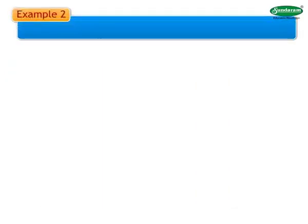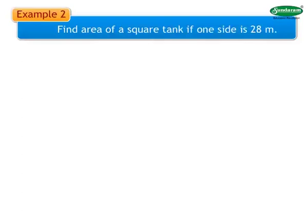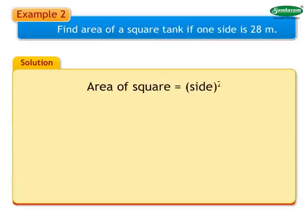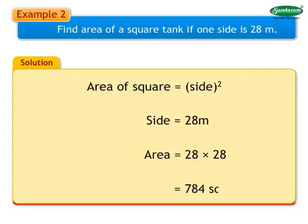Example 2: Find the area of a square tank if one side is 28 meters. Solution: Area of square equals side into side. Side is 28 meters. Therefore, area equals 28 into 28, equals 784 square meters.